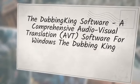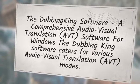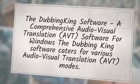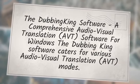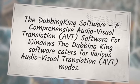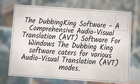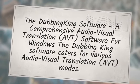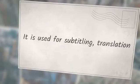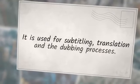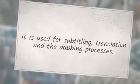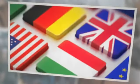The Dubbing King software is a comprehensive audiovisual translation (AVT) software for Windows. The Dubbing King software caters for various audiovisual translation modes — it is used for subtitling, translation, and the dubbing processes.